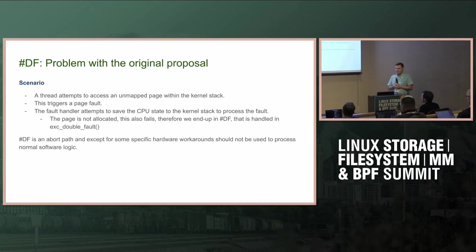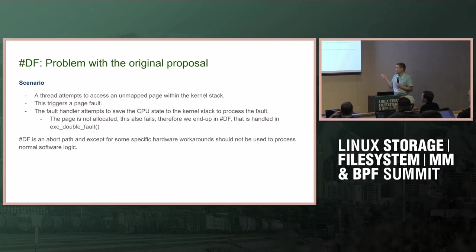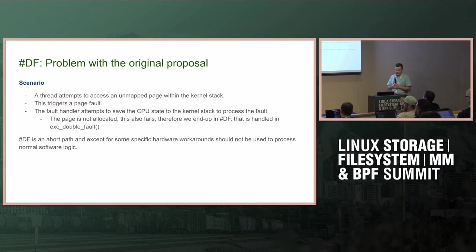The problem is the double fault. A double fault occurs because a thread attempts to access an unmapped page in its stack, which triggers a fault. But to handle the fault, we save the CPU state to the stack — and we don't have the stack, so we get a double fault. We end up in the x86 double fault handler, which is fine because it has its own IDT stack that is always there.